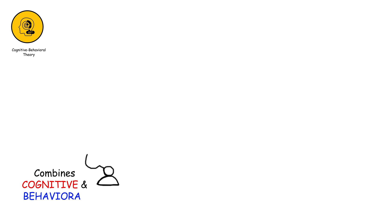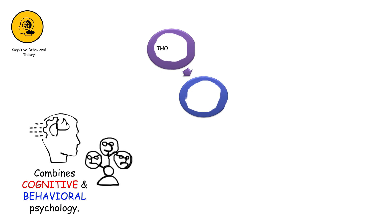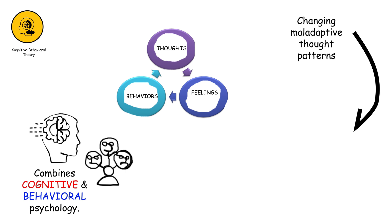Cognitive behavioral theory, combining elements of cognitive and behavioral psychology, focuses on how thoughts, feelings, and behaviors interact. It suggests that changing maladaptive thought patterns can lead to changes in behavior and emotions.